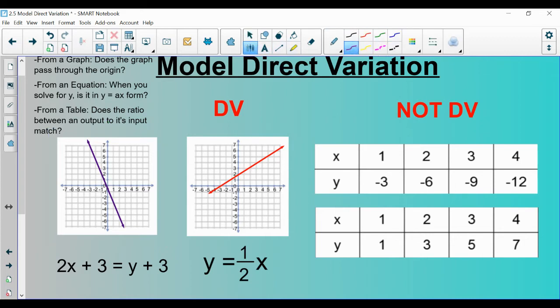Let's go ahead. We can pick this color. This one is direct variation. This one is not direct variation.